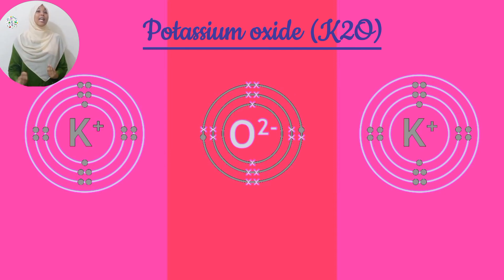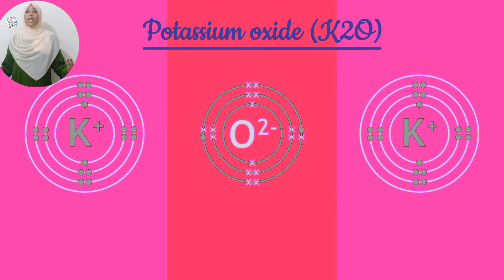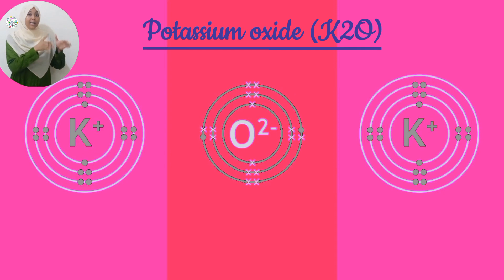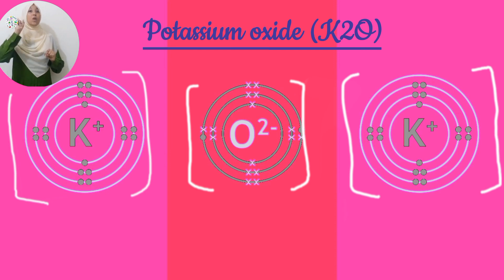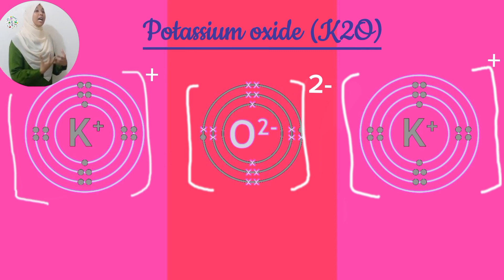Oxygen gains the 2 valence electrons to form an ion with an electron configuration of 2, 8, and it is stable. To illustrate this: place your oxygen ion at the center, enclose it in brackets with the charge of 2 negative, and the 2 potassium ions on either side are attracted towards the oxygen ion.